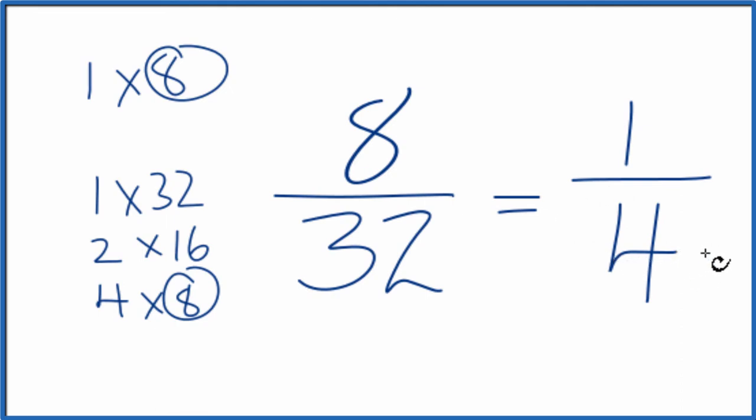And again, these are equivalent fractions. They're equal, they have the same value. If you divide 8 by 32 or 1 by 4, you'll get 0.25. It's just that we've simplified or reduced the fraction 8/32 down to 1/4.